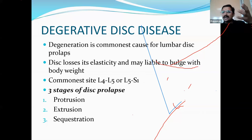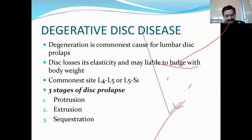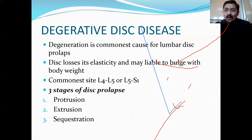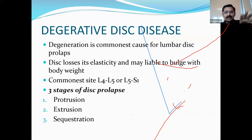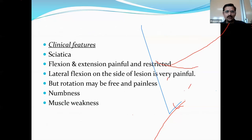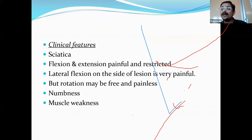Regarding sciatica, ancient Ayurvedic texts describe gridhrasi in great detail — spanning the hip, gluteal region, thigh, leg, and foot. The initial pain is often over the lateral aspect of the hip rather than the lower back or mid-gluteal. Clinically, flexion and extension are painful and restricted; lateral flexion is slightly painful; rotation is often free. However, where rotation is painful indicates acute low back pain — even smiling, laughing, coughing, or traveling causes significant pain.